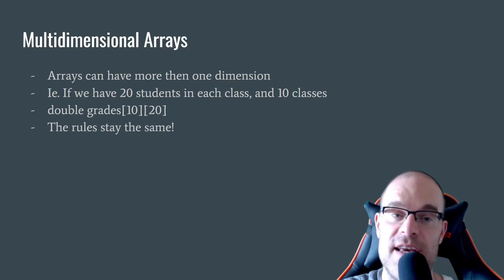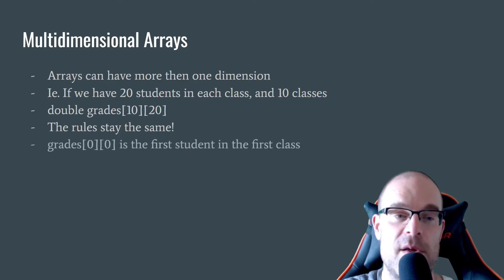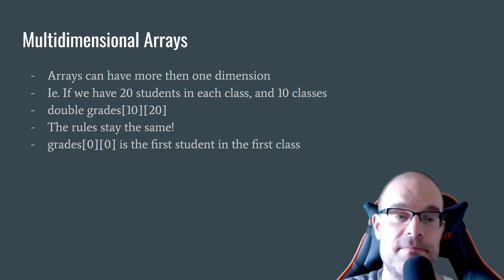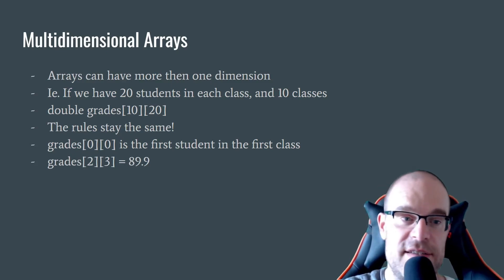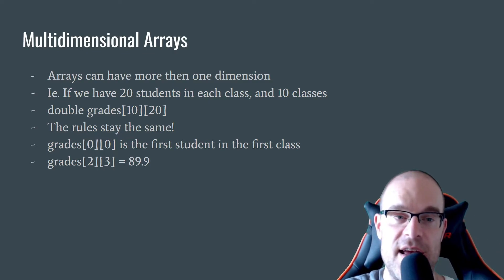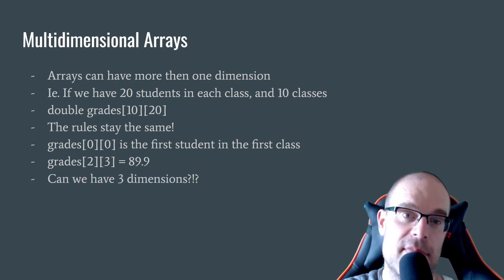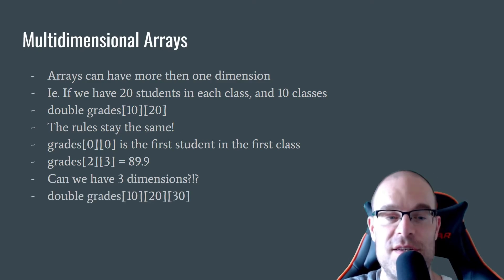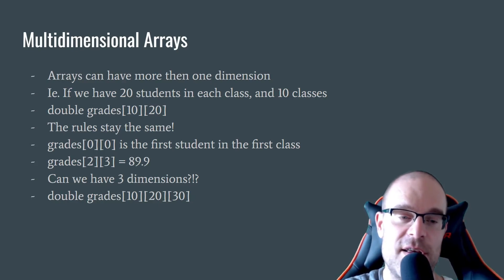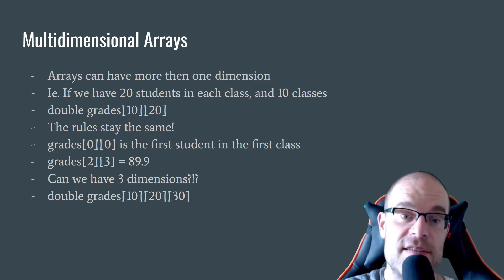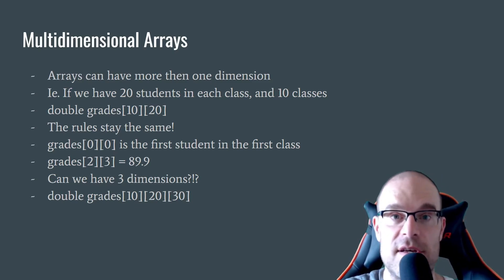The rules about working with arrays stay the same, no matter how many dimensions you're working with. grades[0][0] is the first student in the first class. Here's another one: grades[2][3] assigned 89.9 is the third student in the fourth class. Is it possible to have three dimensions? Yes — same grades format of doubles: grades[10][20][30], where 10 could be the number of classes, 20 the number of students in each class, and 30 the number of schools we're keeping track of altogether.